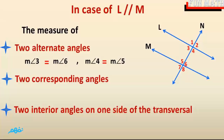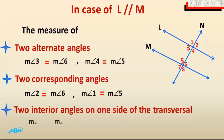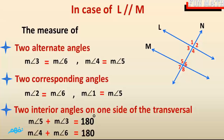For the corresponding angles, we find measure of angle 2 is equal to measure of angle 6, and measure of angle 1 is equal to measure of angle 5. For the interior angles on one side of the transversal, we find measure of angle 5 plus measure of angle 3 is equal to 180 degrees, and measure of angle 4 plus measure of angle 6 is equal to 180 degrees.